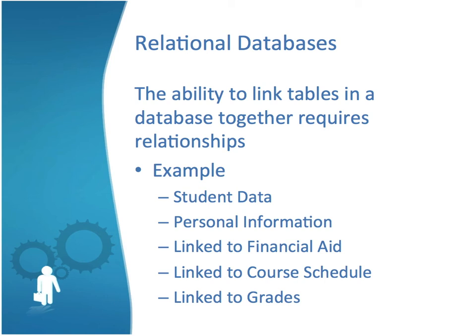Without those relationships, you have no way of accessing that information. So if you didn't have the relationship between the campus-wide ID from your student data to your financial aid information, you would either be duplicating information by keeping all personal data in multiple locations — which would be bad design. For instance, if you got married and your last name changed, it would have to be updated in each entity of that data. You want to relate tables together in the most efficient way possible.